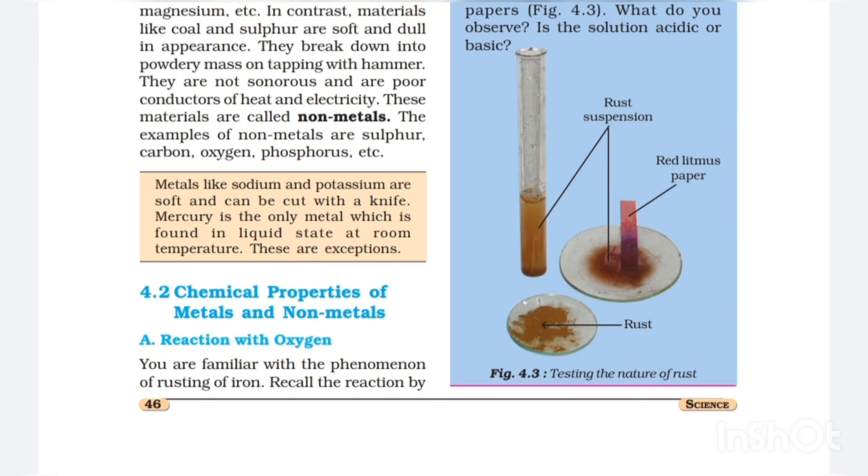Figure 4.3 - testing the nature of rust - is being given. So here is a flask and red litmus paper, and you can see the rust in the third figure. The rust suspension has been indicated and red litmus paper also. You should learn all these examples and all the reactions and observations and all the things that are given in the yellow box.